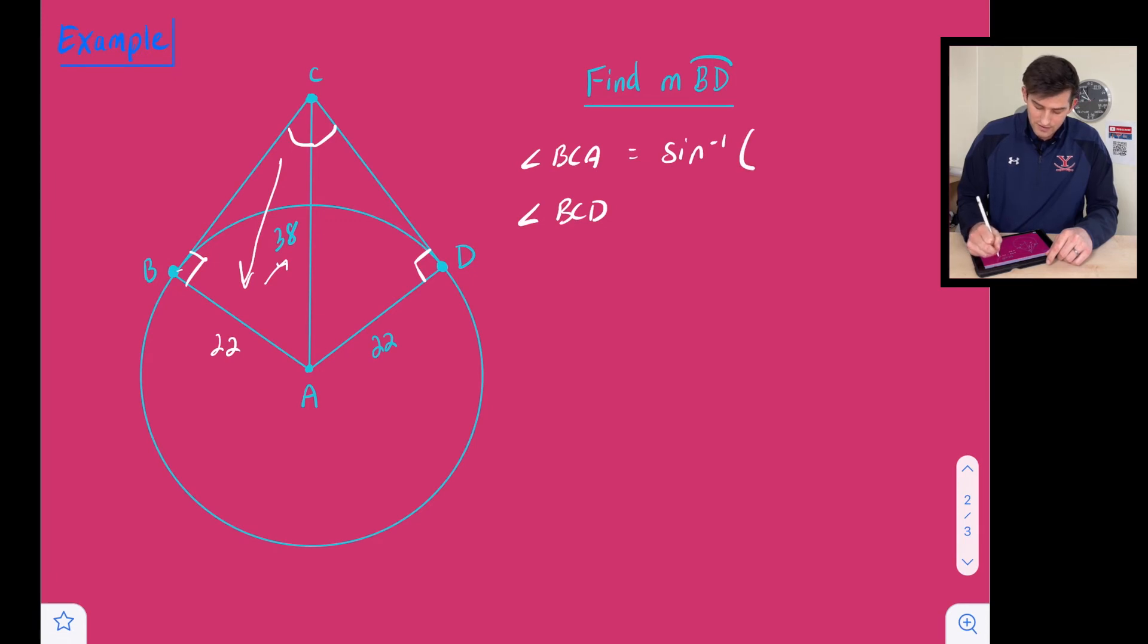So I'm going to do inverse sine and I'm going to do 22 divided by 38. So my calculator, 22 divided by 38 on the inverse sine, and it's going to give me 35.3. So I'm just going to say approximately. So I'll change this equal sign to approximately, and we'll just call it 35 degrees.